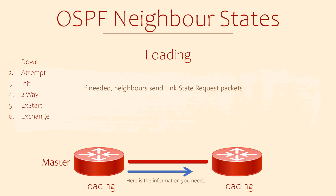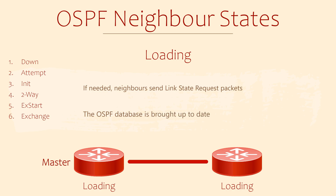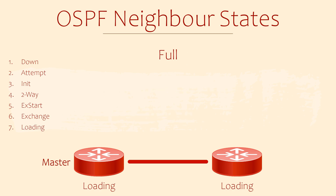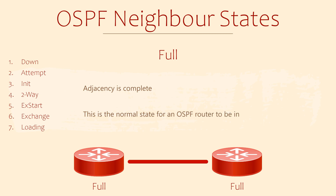The loading state is where the real database building happens. Based on the DBDs, the neighbours know what they need to know more about. They will then send LSRs and LSUs to request and share network information. The goal, of course, is to synchronise their databases. Once the databases are up to date, they can run the SPF algorithm and find their best paths through the network. And finally, the full state — this is where the adjacency is complete and the databases are synchronised. This is the other state we would expect healthy routers to be in, the other being two-way for DR other routers.